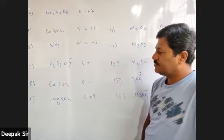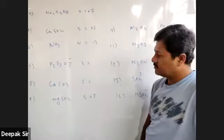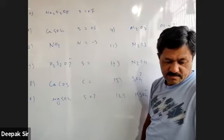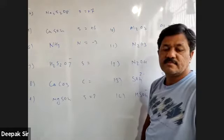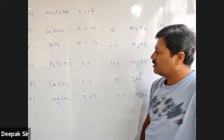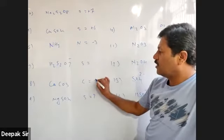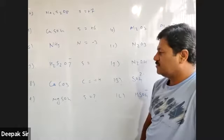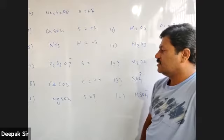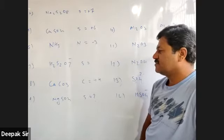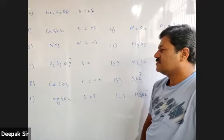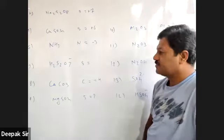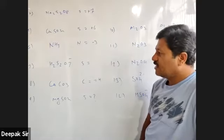What is the oxidation number of carbon? A student answers: it is plus four, sir. Are you sure? Yes. What is the oxidation number of calcium? The student says: I took it as plus two because it is a metal and it belongs to the alkaline group, which is the second group. I Googled it.